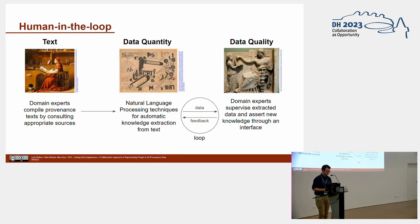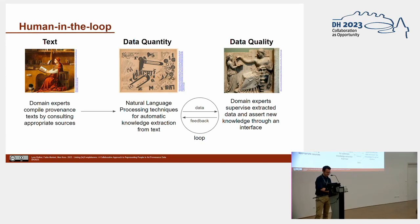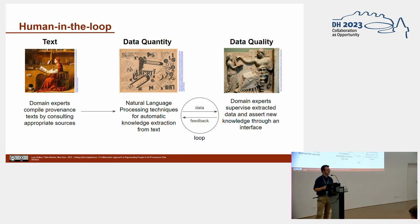To address this, we have developed a human-in-the-loop workflow. Starting points are provenance records published as text and compiled by a provenance expert. Since it is resource-intensive to structure provenance text manually, we are pioneering the use of artificial intelligence on provenance records to extract information through natural language processing techniques. This allows us to structure a large amount of data automatically. To ensure data quality, a provenance expert supervises data extraction. Through this dialogue between expert and machine, we ensure a balance between quantity and quality of the dataset.